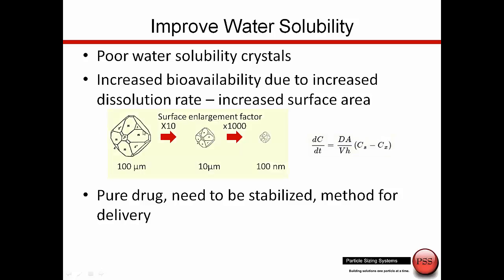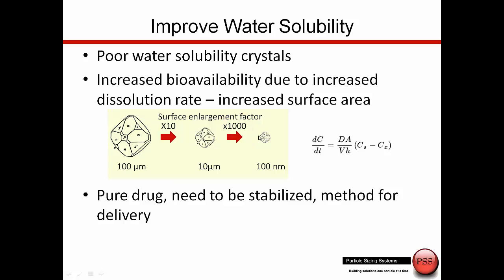If we take a 100 micron crystal and mill it down to 10 microns, we have an increase in surface area by a factor of 10. But if we get it down to the scale of 100 nanometers, we increase it 1,000-fold. That 1,000-fold increase in area has a great impact on the dissolution rate, making it much easier for the drug to be water-soluble and easier to administer to the patient.